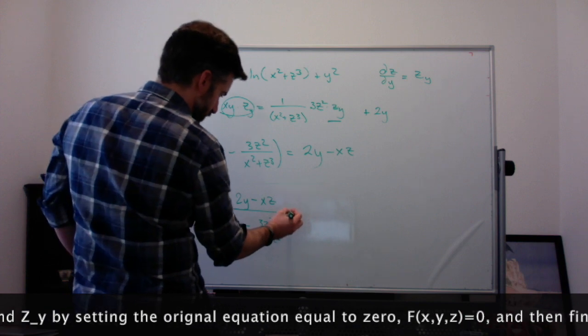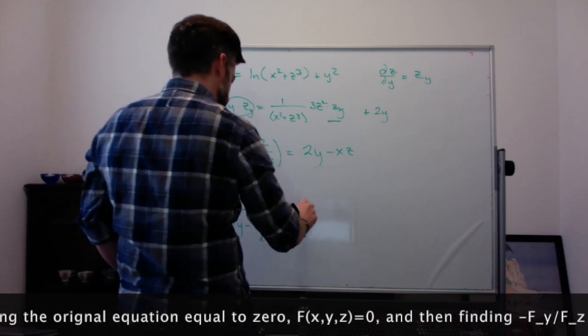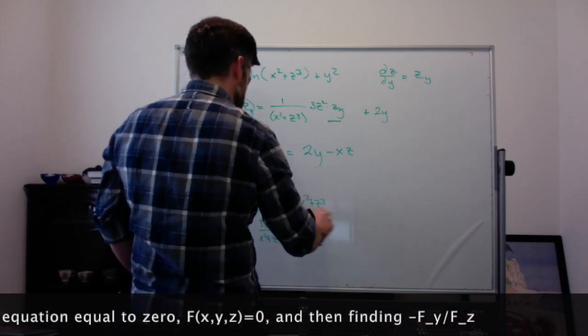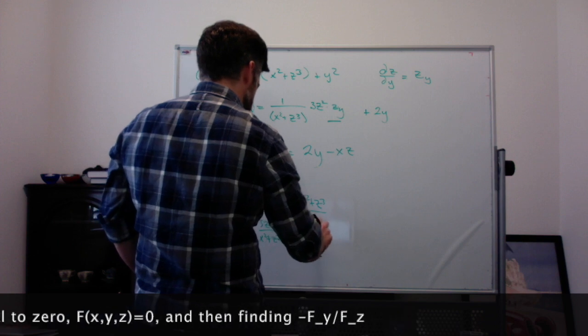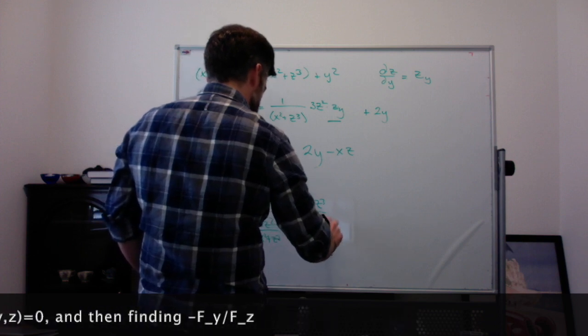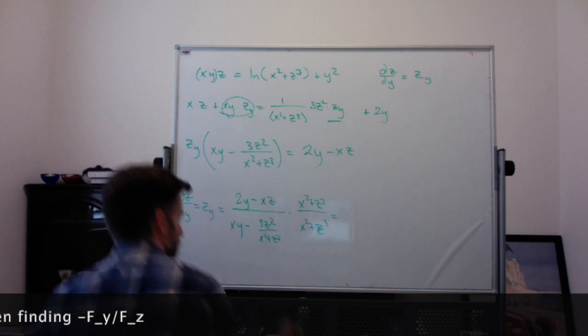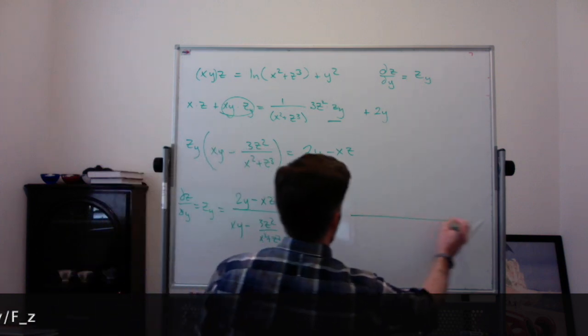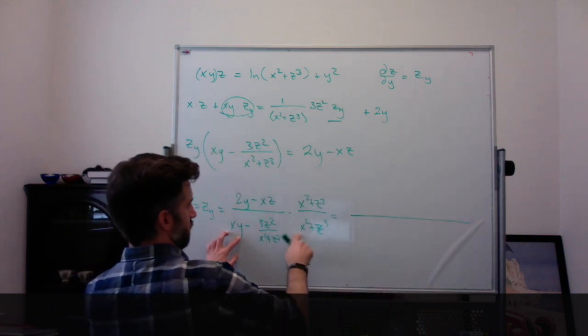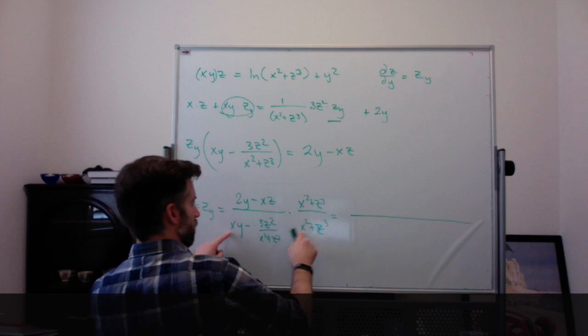And then, again, you could multiply by x² + z³ on top and bottom so you don't have fractions in fractions. On top, it's going to be kind of gross. Now, let's do the bottom first. So, the bottom is going to be xy times x² + z³ is going to be x³y.